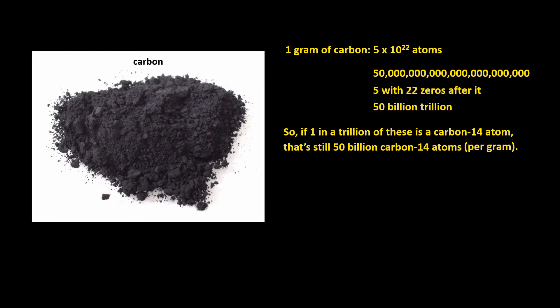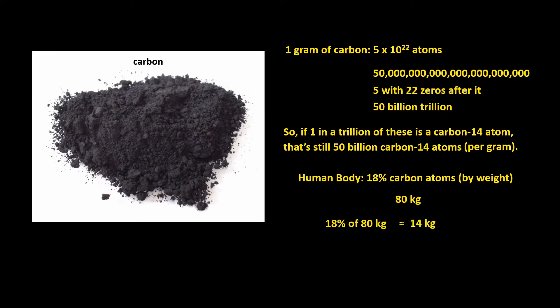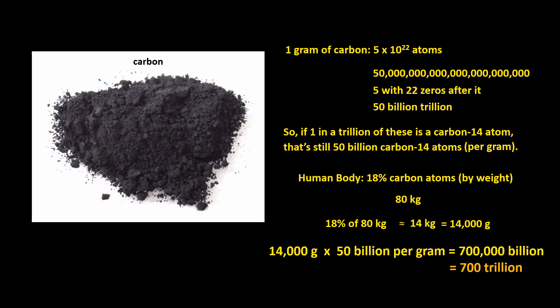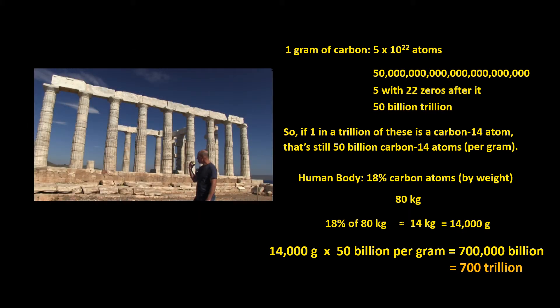That's per gram, remember. A human body is made up of about 18% carbon atoms by weight. Weighing about 80 kilograms, 18% of that is about 14 kilograms, or 14,000 grams. Since each gram of carbon has 50 billion carbon-14 atoms in it, we're talking trillions of them. We are all very slightly radioactive thanks to the carbon-14 atoms that we have in us.